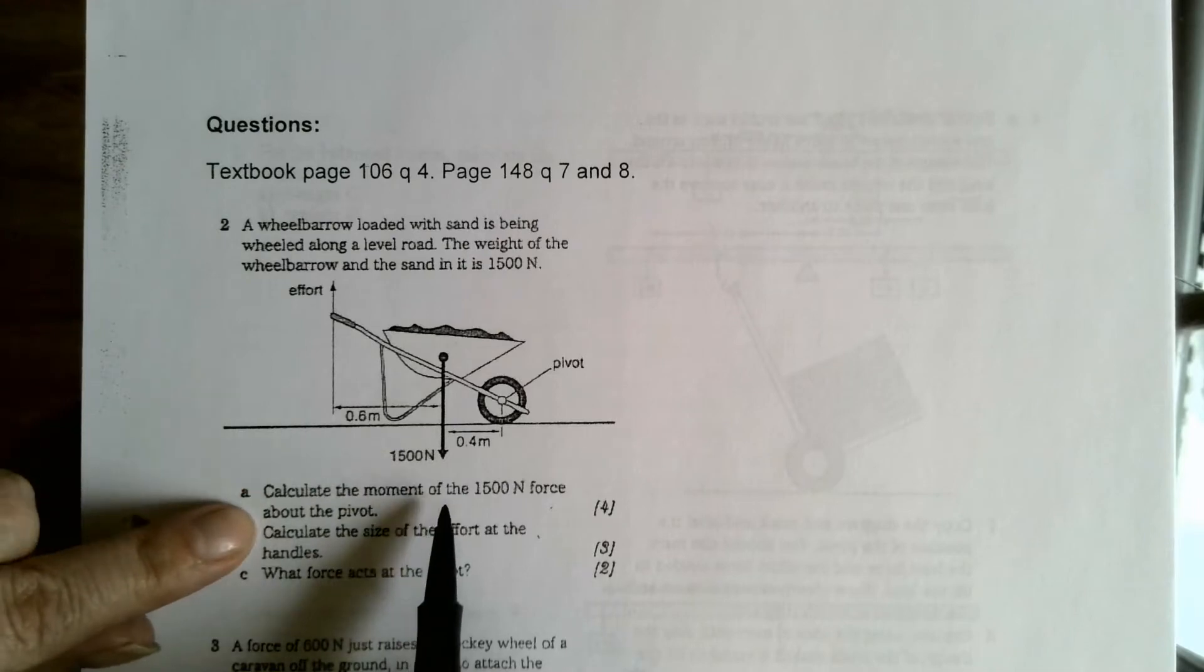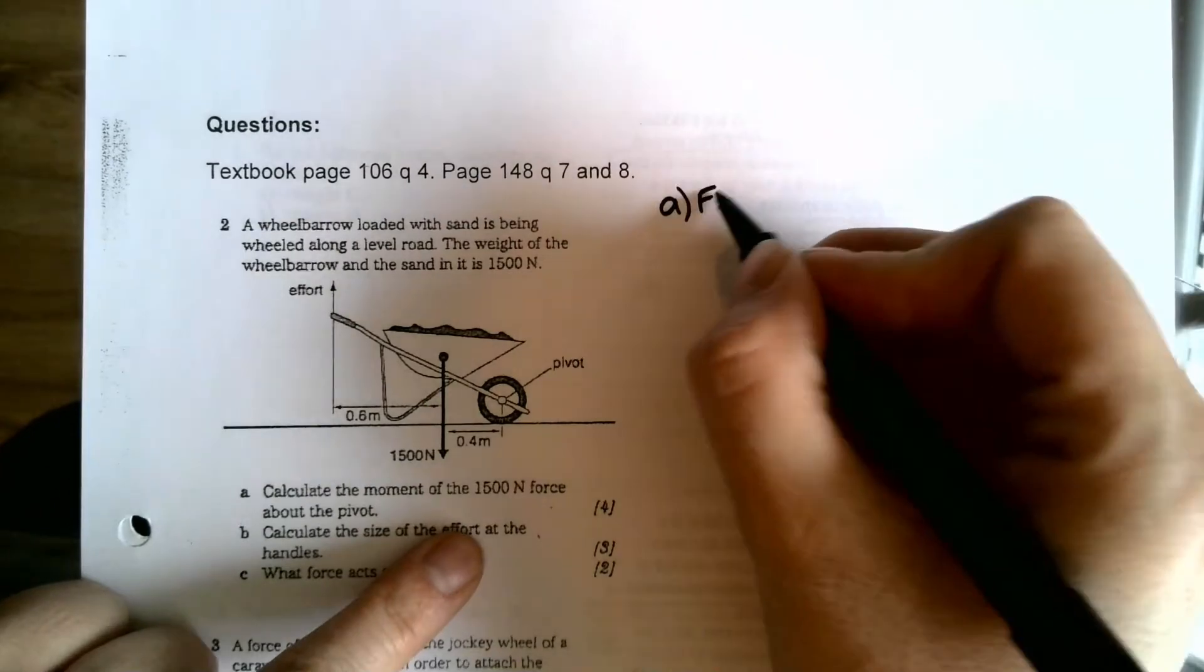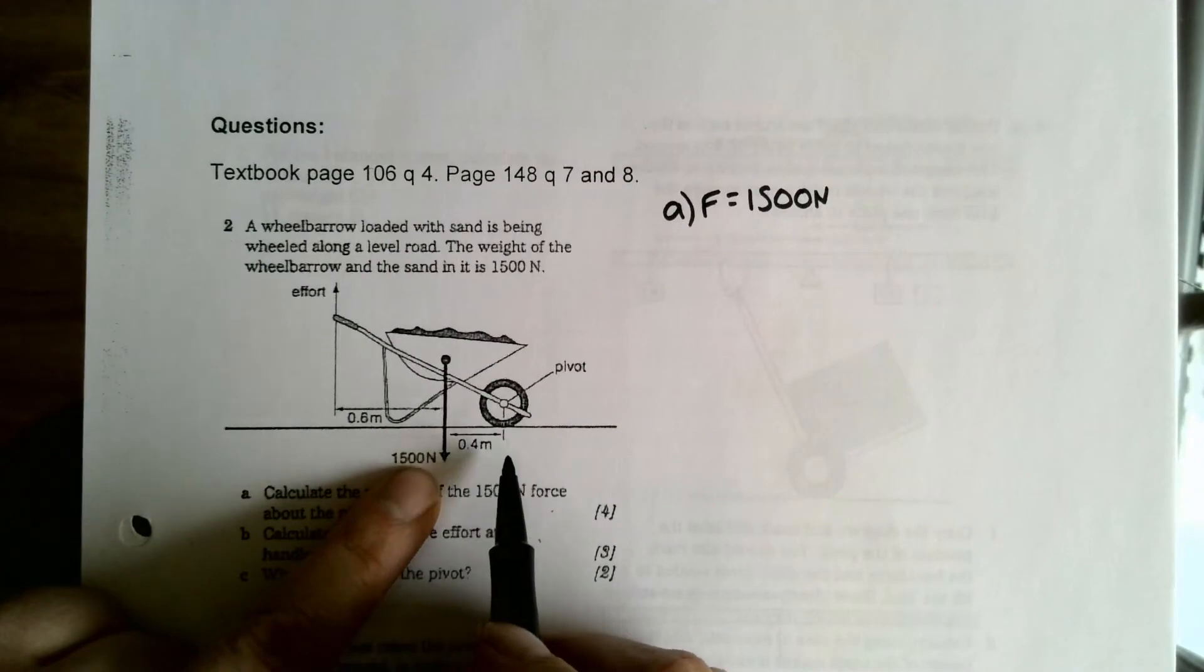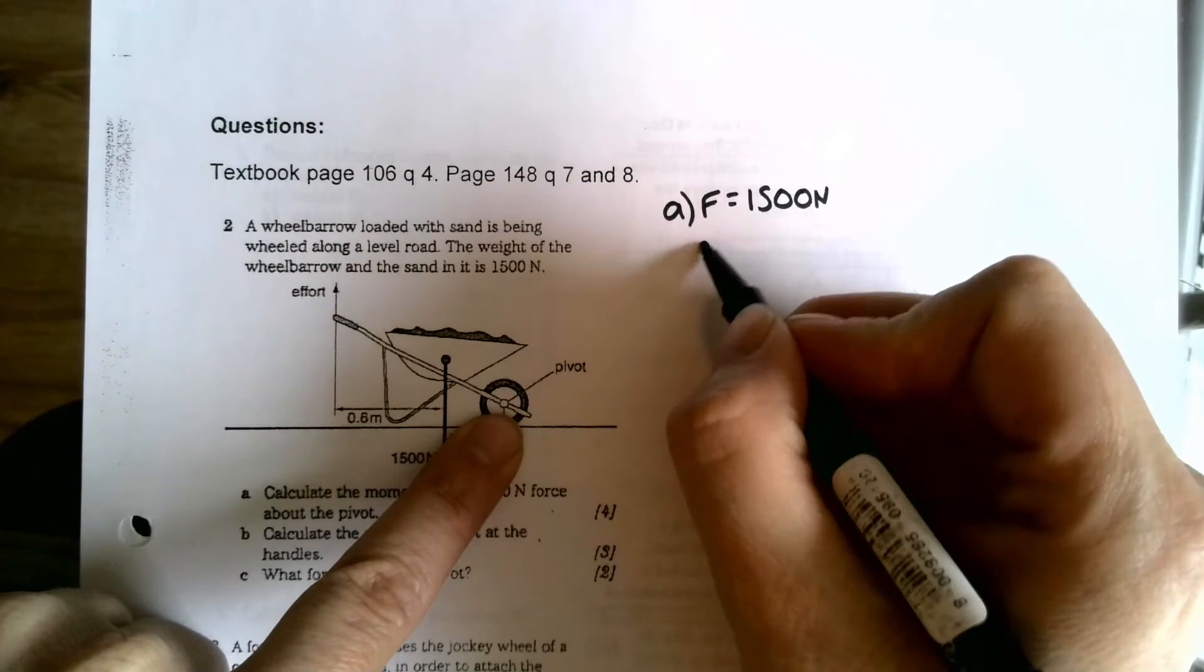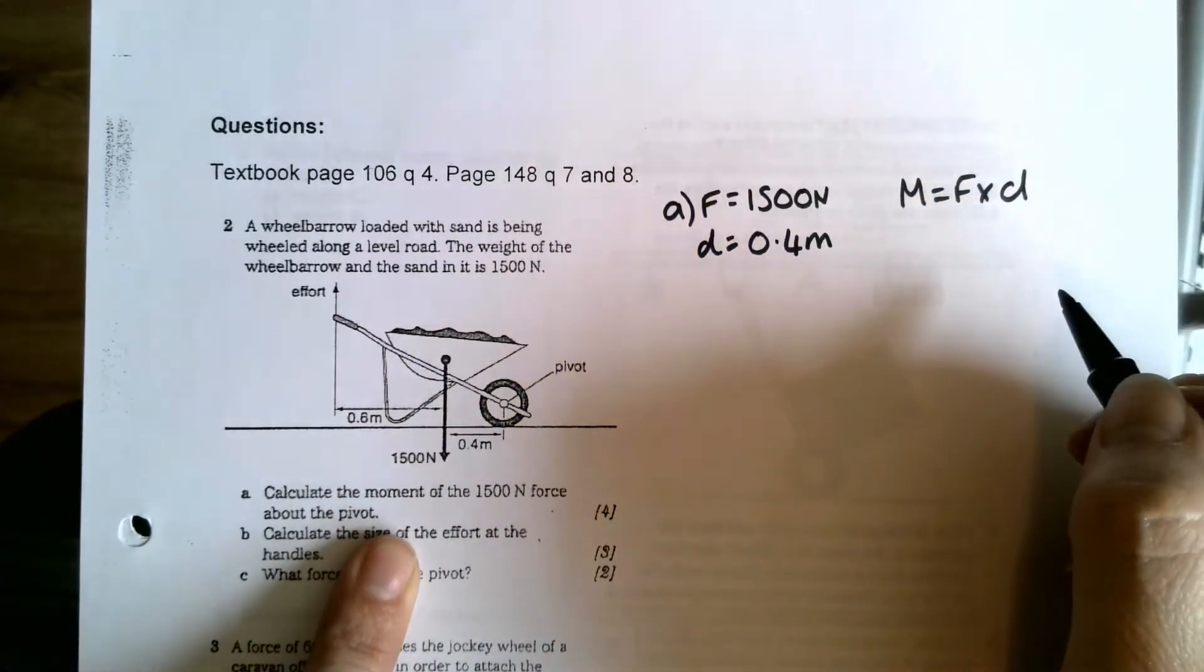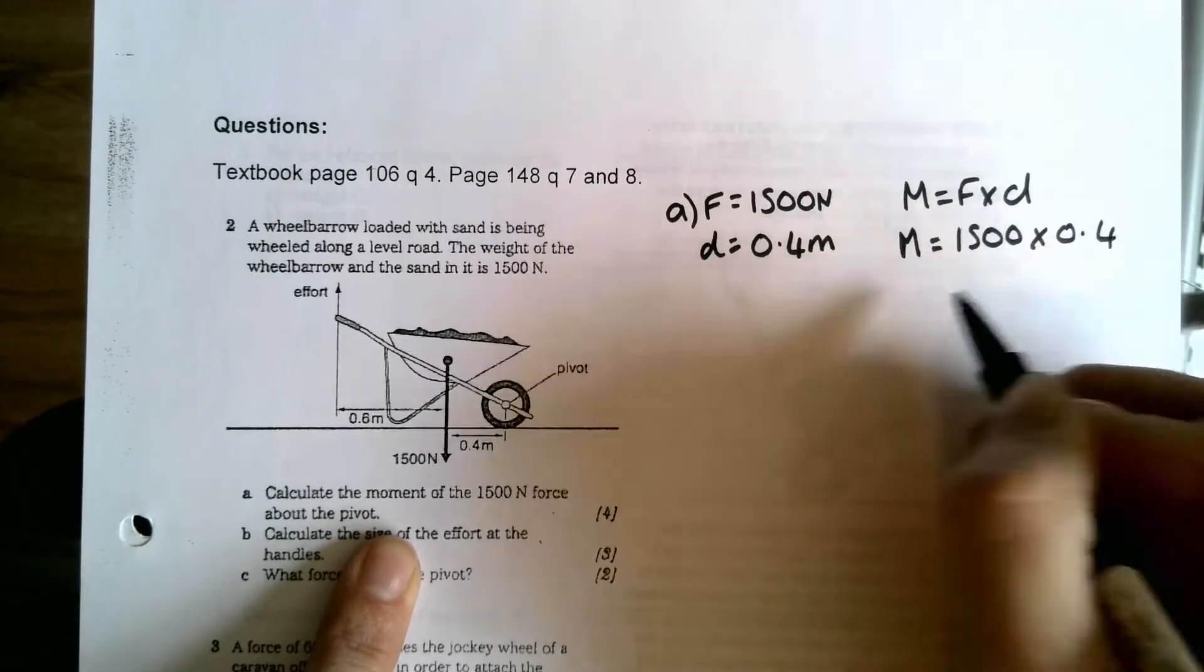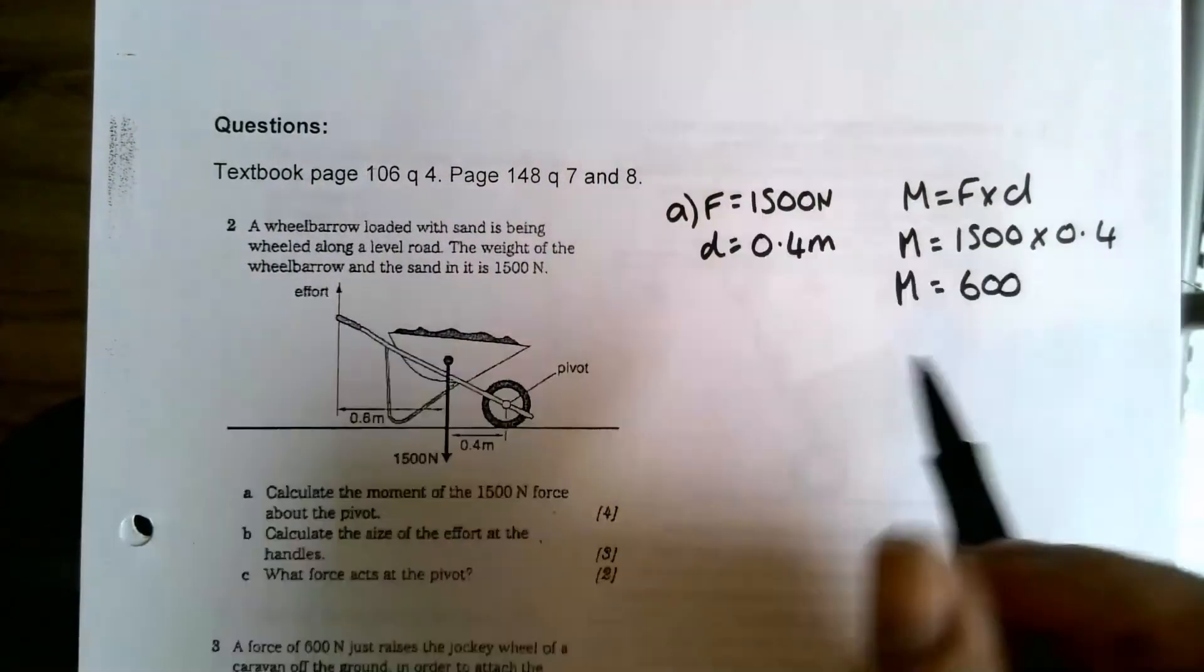Calculate the moment of the 1500 newton force about the pivot. So we know the force is 1500 newtons, and we can see here in the diagram the distance from the pivot is 0.4 meters because the pivot is going to be the center of the wheel. And then all we have to do is put that into our moment equation. So moment equals force times distance.